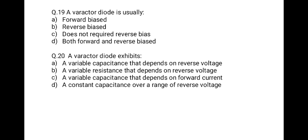The next question: a varactor diode is usually — first forward biased, second reverse biased, third does not require reverse bias, last both forward and reverse biased. The correct option is B: reverse bias.